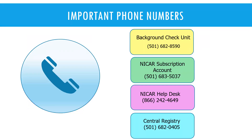Important phone numbers: we have the main phone number for the background check unit, the NICAR subscription account line for assistance with your account, invoice, or payment information, and the NICAR help desk for issues logging in, resetting passwords, or adding users to your account. The central registry phone number is also available if you have issues with your child maltreatment checks.